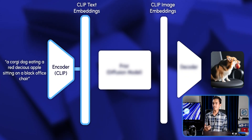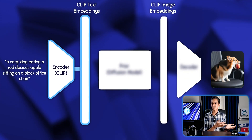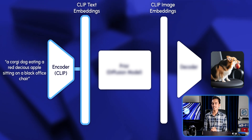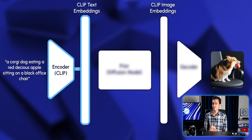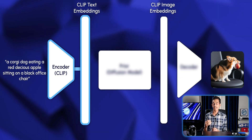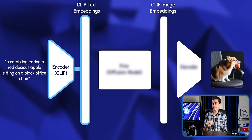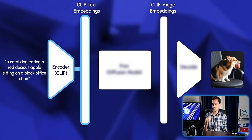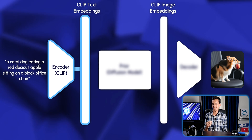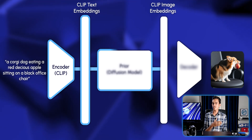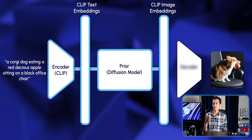The encoders inside CLIP are used to generate text and image embeddings from the user prompt. However, the image embeddings generated at this stage are not yet finalized — they are moved on to the next stage called the prior.